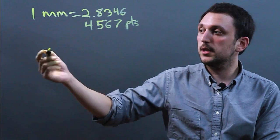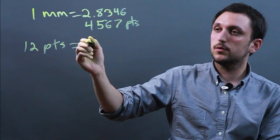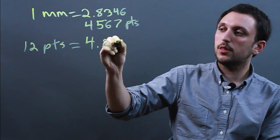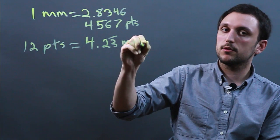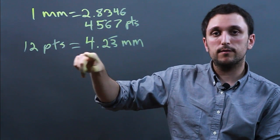And more usefully, let's say you have a 12-point font. Well, 12 points equals 4.23 repeating millimeters. So you're roughly dealing with 4.2 millimeters in 12-point font.